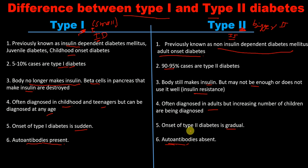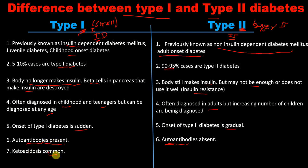The next difference is ketoacidosis. In type 1 diabetes mellitus, just as autoantibodies are present, ketoacidosis is also common. Whereas in type 2 diabetes mellitus, ketoacidosis is rare.